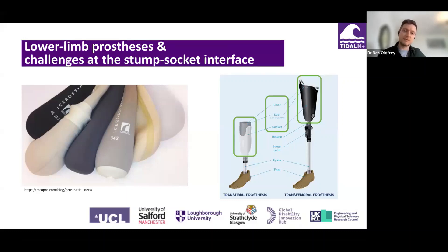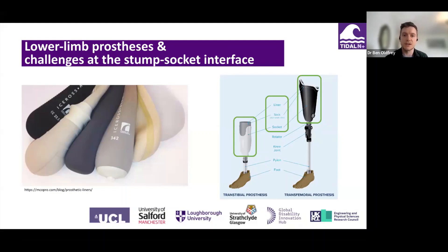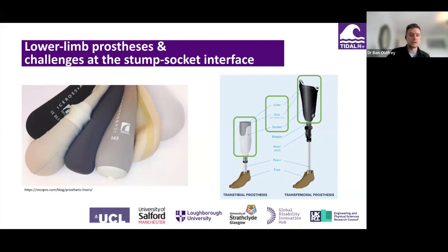But how could these be improved? Particularly thinking about people that have residual limbs with troublesome topologies — shapes that are difficult to fit for prosthetists. There might be heavy scar tissue, or the residual limb volume might be varying greatly — daily, seasonally — but what could be done?